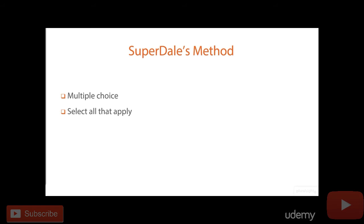You might see some questions that say 'select all that apply,' and these are the ones that I don't like, because you don't get partial credit. If there are five answers and you're supposed to pick three but you only pick two, or you pick three but only two are right, you do not get partial credit. One trick I've learned — it's kind of a flaw — is that if I get a question with multiple checkboxes and it says 'select all that apply,' I'll start checking as many boxes as I can, and an error will pop up when I check one too many. So if it errors on the fourth one, I know I only need to select three.